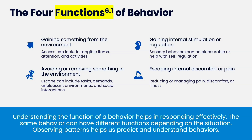Everybody does that at some point. Access has tangibles, attention, and activities — and so does escape. It's anything in the environment. Engaging in behavior to gain something positive from the environment is positive reinforcement, or engaging in behavior to remove something negative from your environment is negative reinforcement. And then these other two are the body. If it doesn't happen within the environment and instead happens within your body, we call these automatic behaviors. The first is to gain something positive in your body — most of this is sensory behaviors.